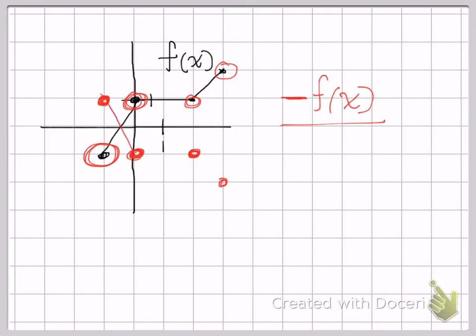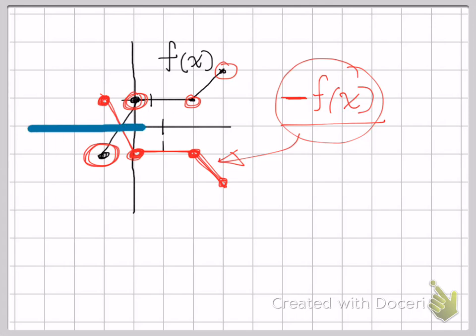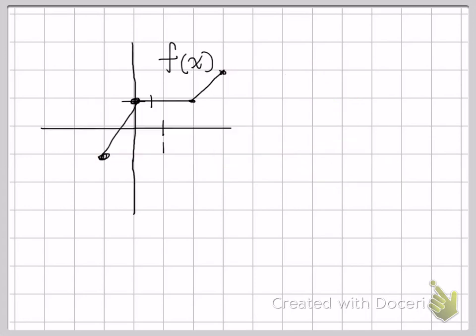We connect those points and that is negative f of x — a reflection through the x-axis. So what do you think a reflection through the y-axis would look like? If this is a reflection through the x-axis, does it make sense what a reflection through the y-axis would look like? Let's take a look at that.